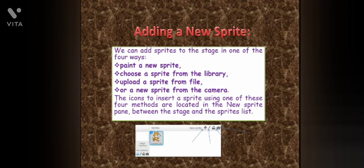Second, choose a sprite from the library. You can insert a sprite from the Scratch library. After opening the sprite library, you can choose the desired category on the left and select the sprite.